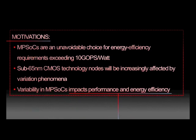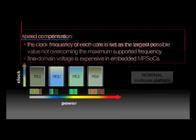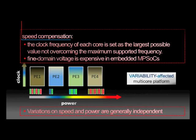Nowadays, multiprocessor systems-on-chip are widely produced because of increasing performance and energy efficiency requirements. However, new issues have to be considered, as 65 nm CMOS technology and beyond. Specifically, variability impacts the core of the system, causing performance degradation and unpredictable energy consumption. Multiple platforms that are nominally homogeneous become heterogeneous in terms of per-core power and speed. A way to compensate for speed variation is to clock the core at different frequencies, according to the highest supported one.